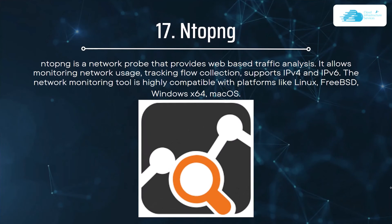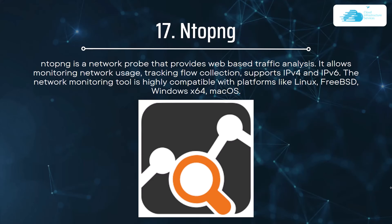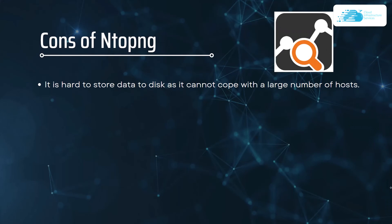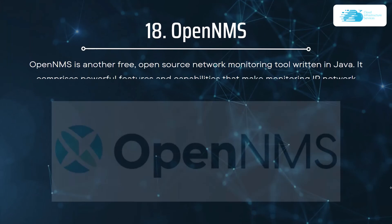Number seventeen on our list is ntopng. ntopng is a network probe that provides web-based traffic analysis. It allows monitoring of network usage and traffic flow collection and supports IPv4 and IPv6. It is compatible with Linux, FreeBSD, Windows 64-bit architecture, and macOS. The pros include a responsive web interface with good graphical representation of traffic flows, real-time data about network traffic, all commercial ntopng tools available for free for research and education, and easy packet capture and transmission at any packet size. The con is that it is hard to store data to disk as it cannot cope with a large number of hosts.